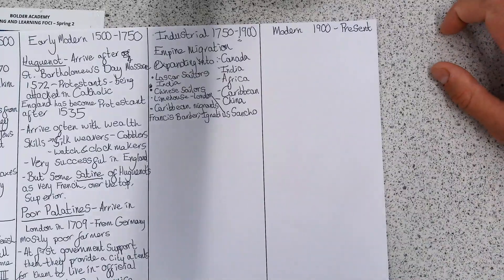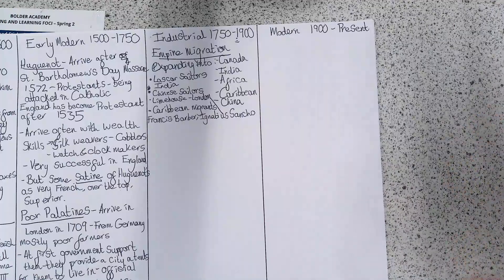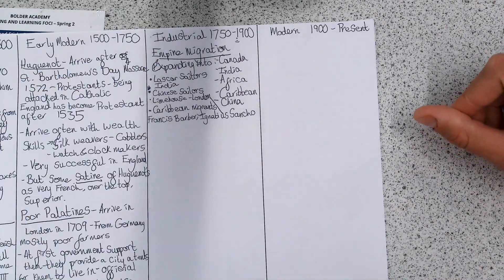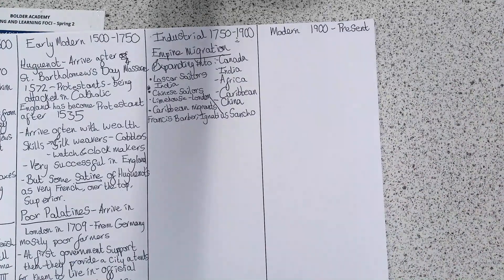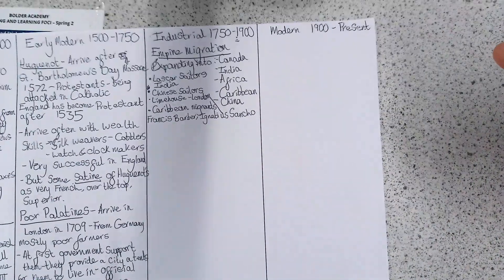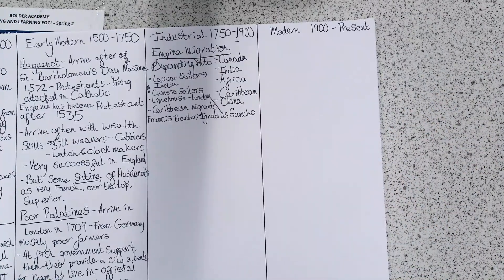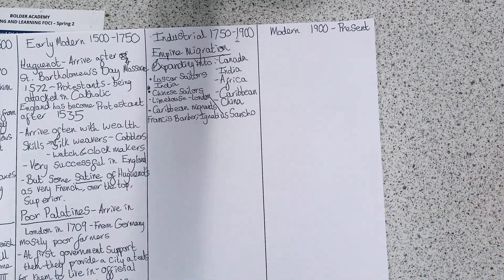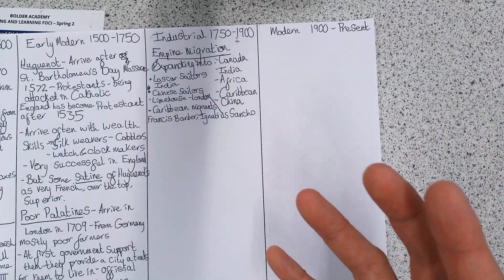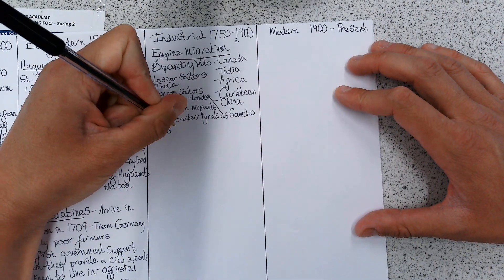If the exam asks you about anything to do with expansion of countries, expansion of colonies, or expansion of empire, that is asking about empire migration. It would be quite simple to construct a good paragraph: talk about all these people coming from all these places simply because Britain has an empire there. There's a really good point that when talking about modern migration and why there are so many people in Britain from India and the Caribbean, the argument is: 'We are here because you were there.' Britain had an empire, therefore these people migrated to the British Isles.